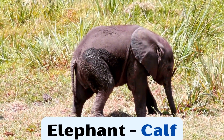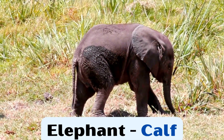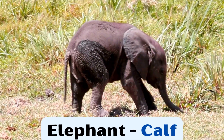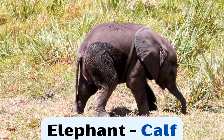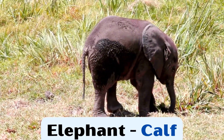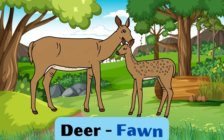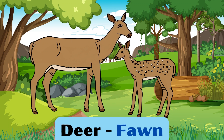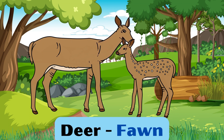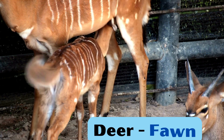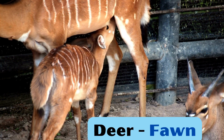The baby elephant is called calf. The baby deer is called fawn.